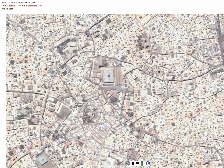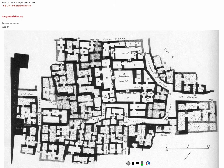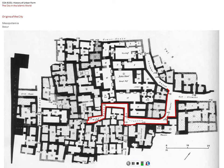Coming off these primary streets, which may only be 10 or 12 feet wide, are actually cul-de-sac arrangements. That is very old — it goes all the way back to Mesopotamian cities such as Ur, dating to the third and fourth millennium before the Common Era, or Assur, around 1300, showing houses developing off a dead-end tertiary street, which comes off a secondary street, leading into a primary street.